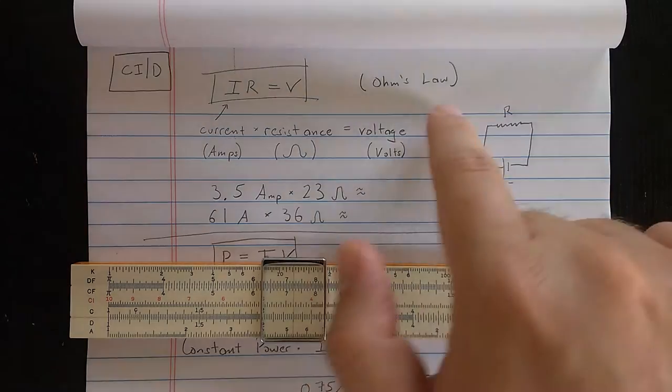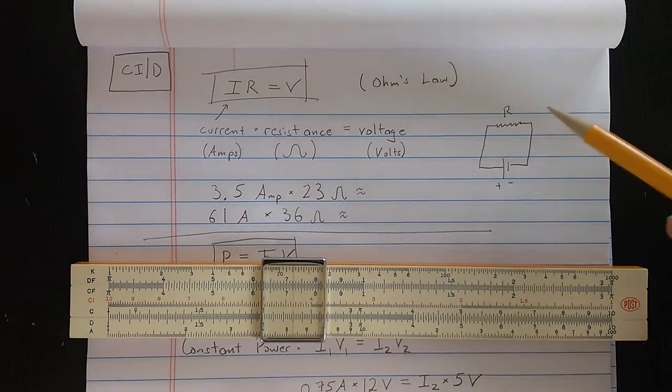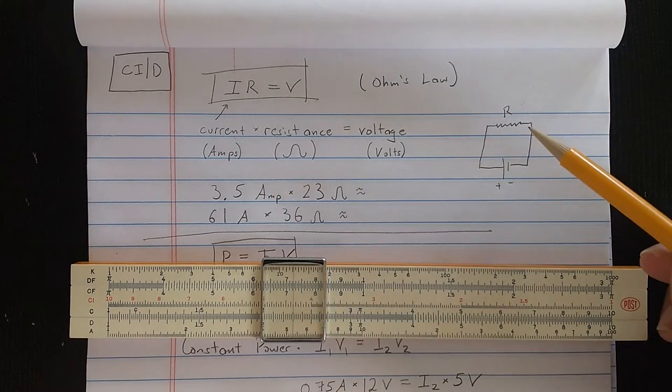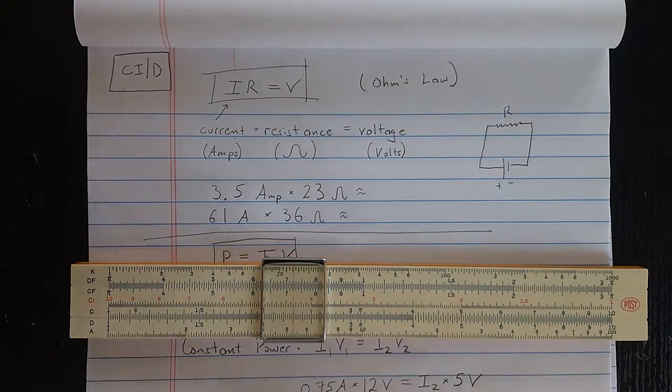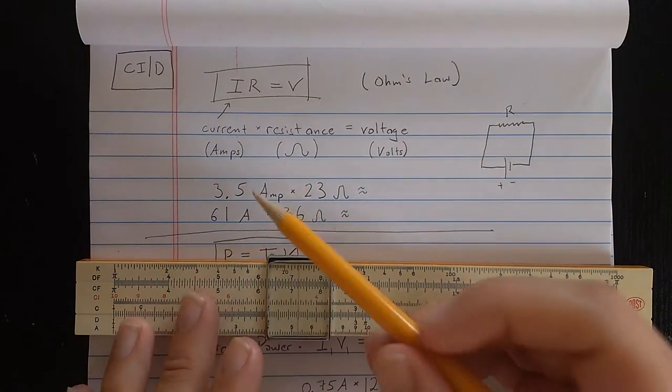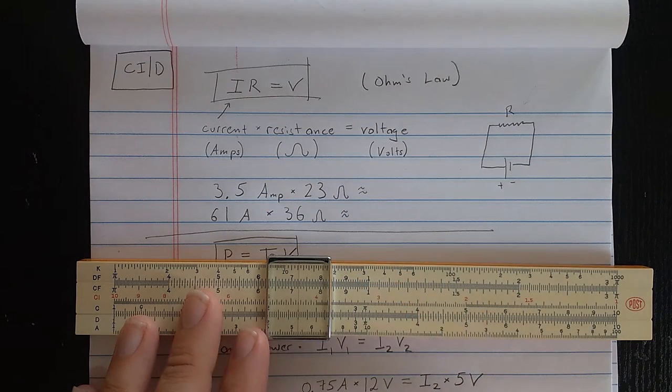But we have Ohm's Law, which says if you have a current through, say, a simple circuit like this, and you have a resistance, then the current times the resistance should be equal to the voltage drop across that resistance. Current is measured in amps, resistance in ohms, and voltage in volts.